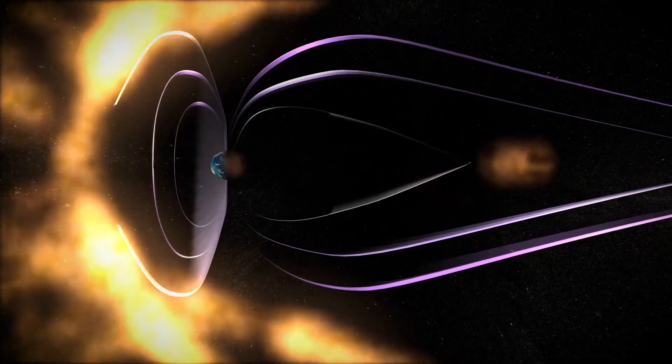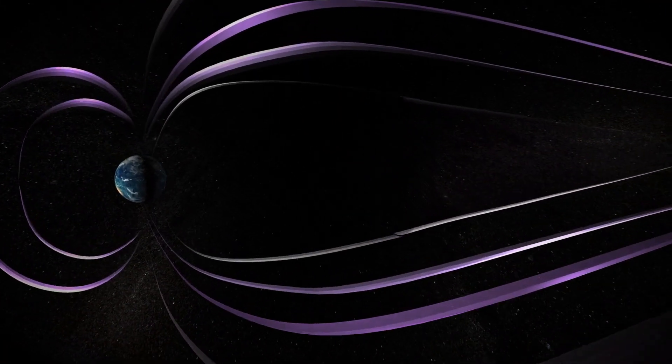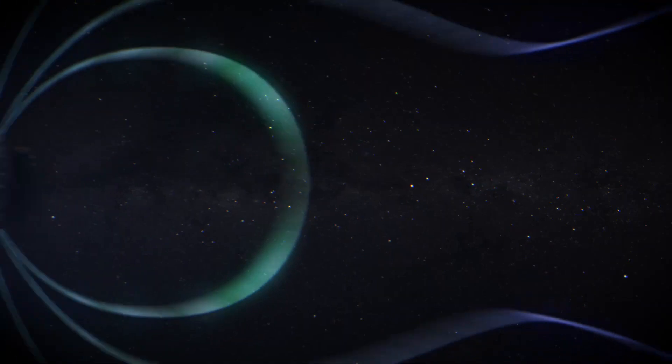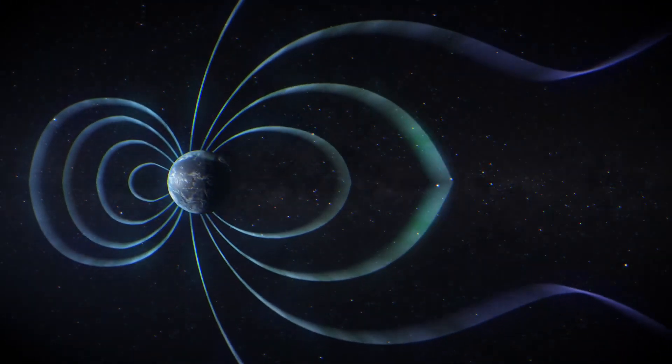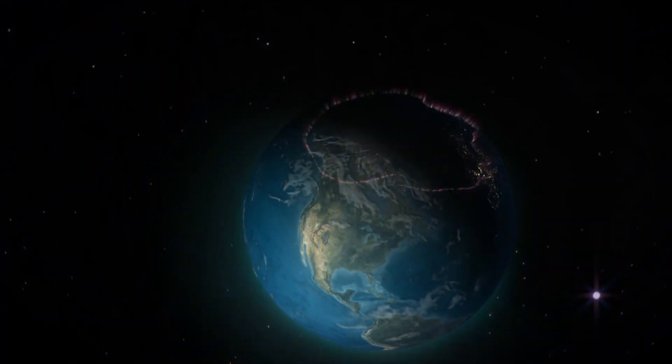Closer to home, magnetic reconnection between the Sun and Earth's magnetic fields is a critical way energy is transferred around our planet. For example, when magnetic reconnection occurs on the night side of Earth, it can push particles down toward the poles, triggering auroras.